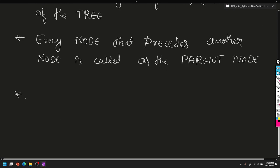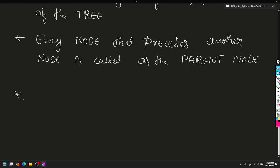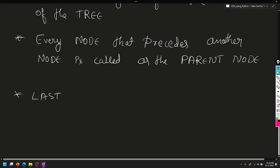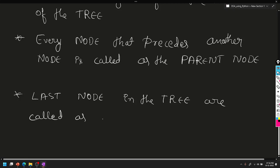Last nodes in the tree are called as leaves — L-E-A-V-E-S. Leaves are healthy.